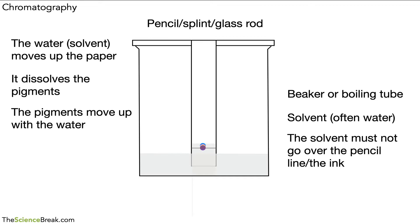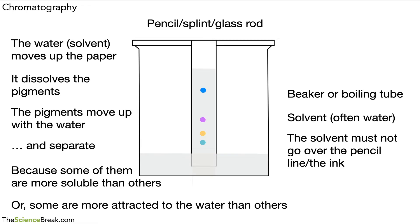As the water moves up the chromatography paper, the pigments will move up with it, but what you may have noticed is that they separate out. They separate because some of the pigments are more soluble than others, and also some of them are more attracted to the water than others. For that reason, they travel at different speeds, and so they get separated out as they go through the chromatography paper.